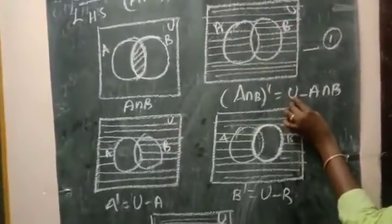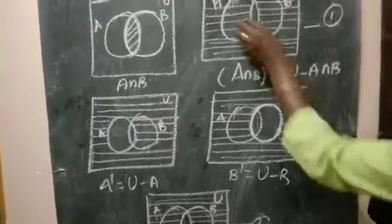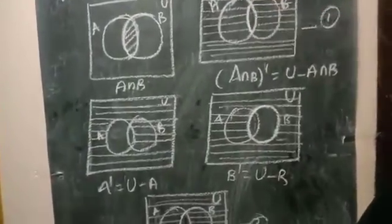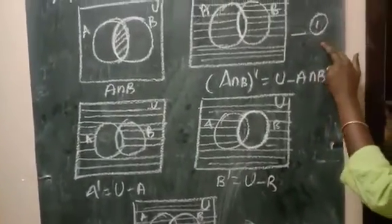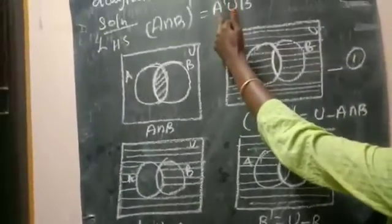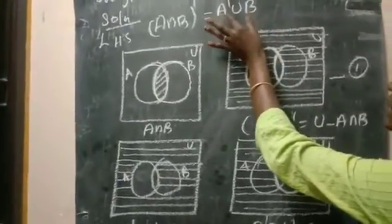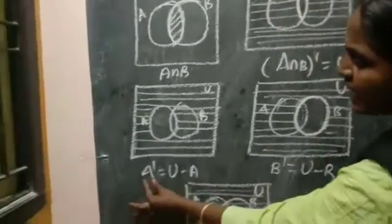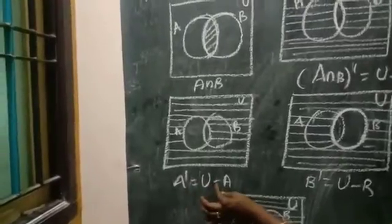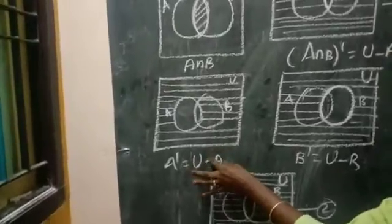So this is the first one — that is our LHS result. Now on the RHS side, first we find out A' and B', then A'∪B'. So A' is equal to the universal set minus A — the set A is excluded in A'.